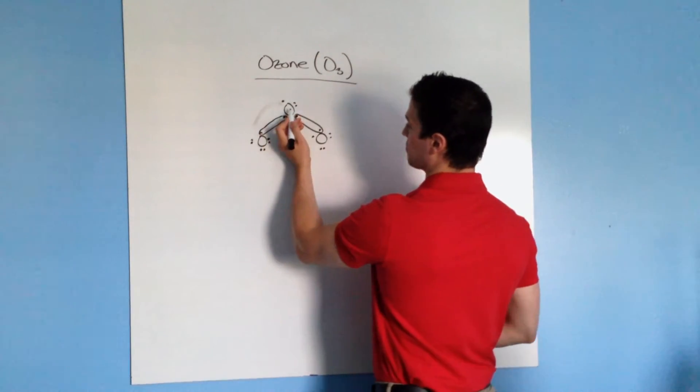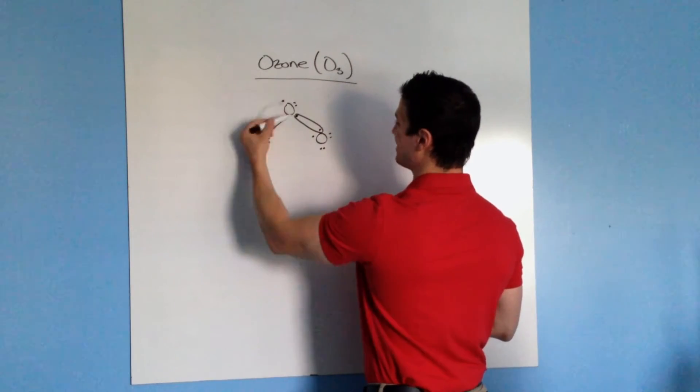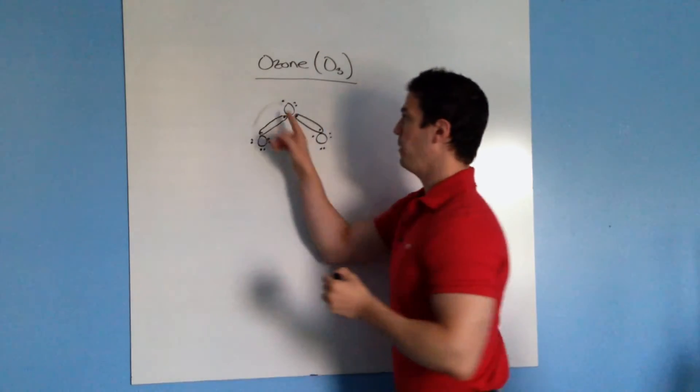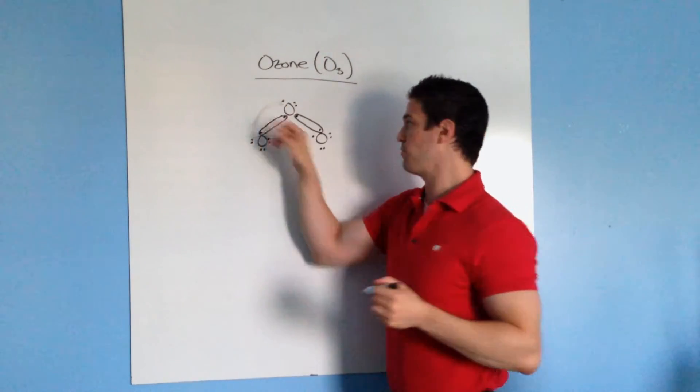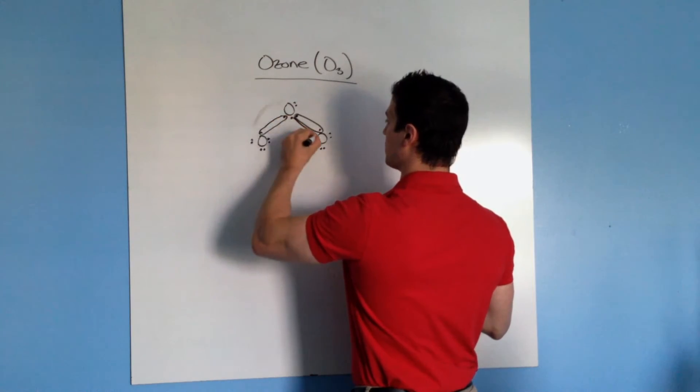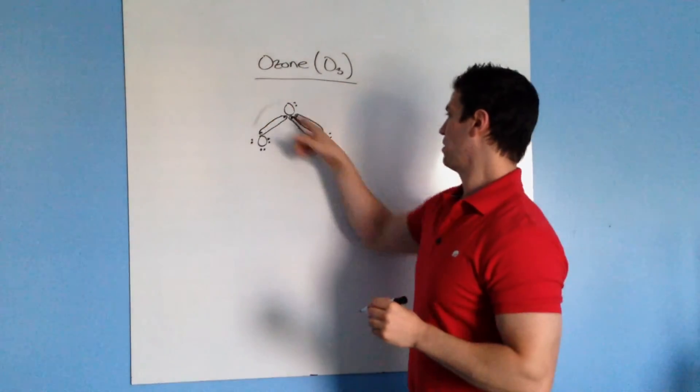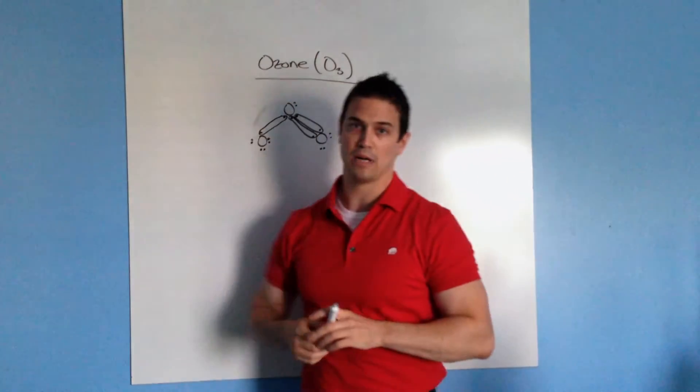Now if you go back to this oxygen right here, it does not because now this one has one, two, three, four, five, six, seven. But now it has a lone pair electron over here, so what this lone pair electron can do—I'm just going to move it over here so it's easier—it's going to bond with this one right over here. And you end up having a double bond oxygen here and a single bond oxygen here.